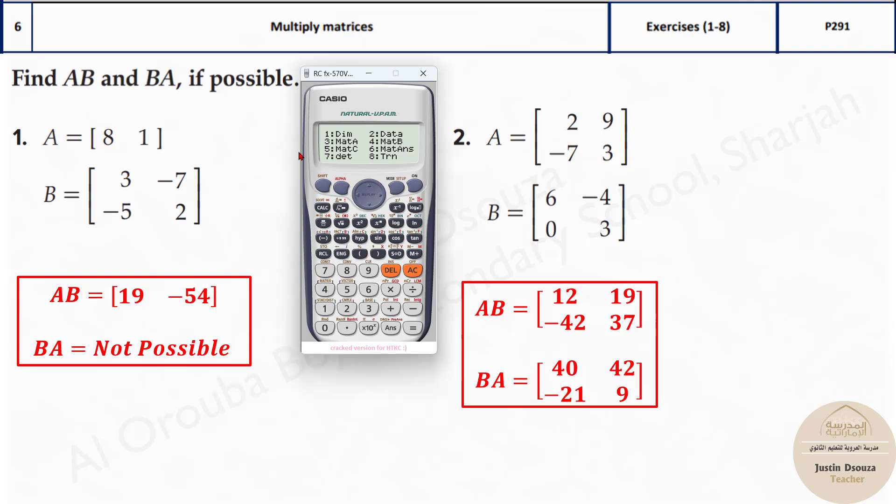All you need to do is shift 4 option 3 for matrix A multiplied by shift 4 and option 4. When you press equal to you are getting the matrix 19 and minus 54. Now let's try same thing.